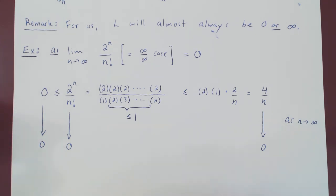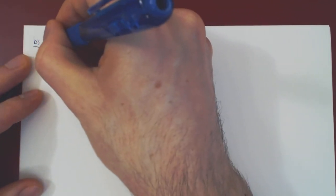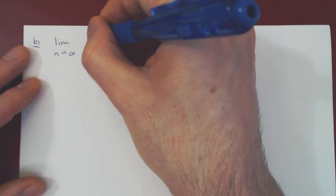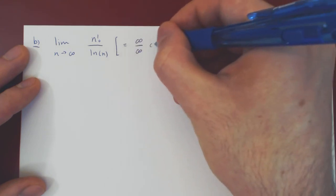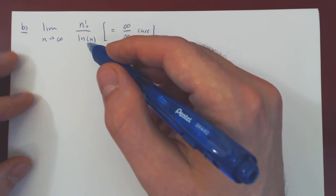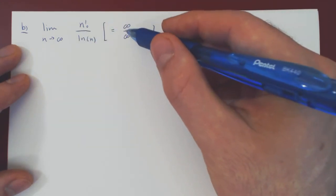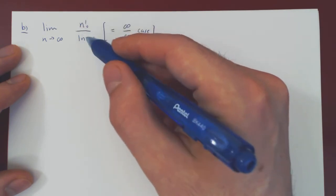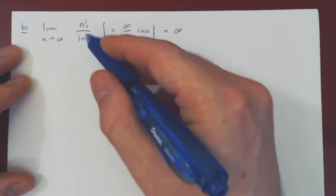Let's consider a second example where the limit will be infinite. What if we look at the limit as n goes to positive infinity of n factorial over ln(n)? Again, both terms go to positive infinity, so we have an infinity over infinity case. We can't use L'Hôpital's rule since we can't differentiate n factorial. But we can use our hierarchy of functions: factorials are way bigger than logarithmic functions. Even though we have infinity over infinity, the numerator is so much bigger than the denominator that the limit should blow up to positive infinity.